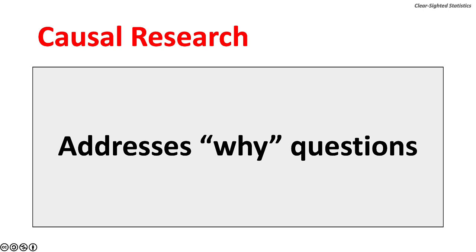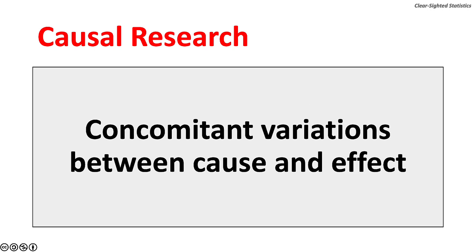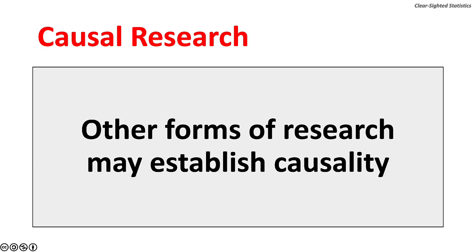Causal research addresses why questions and seeks to establish causal relationships. It commonly employs controlled experiments to determine cause and effect, measuring the concomitant variations between cause and effect. The cause must precede or come before the effect. Cause-and-effect relationships can also be established using large-scale observational studies. In the 1940s and 1950s, the causal link between smoking and cancer was found using large-scale observational studies by Austin Bradford Hill and Richard Doll.